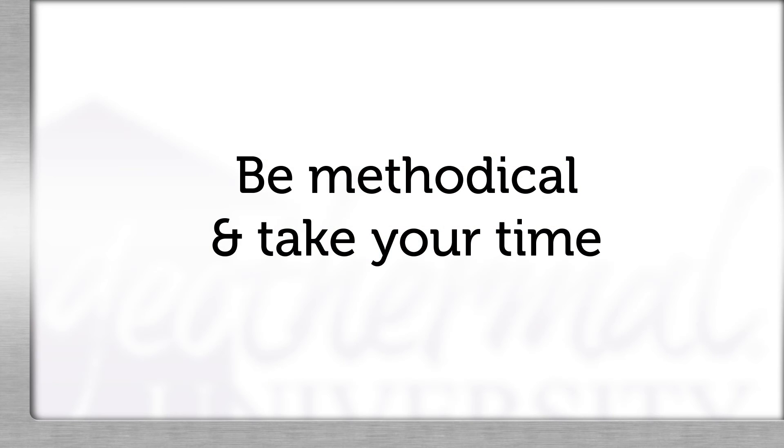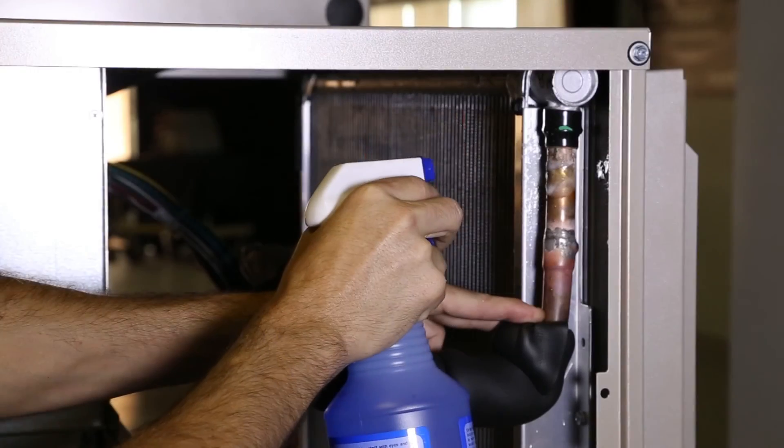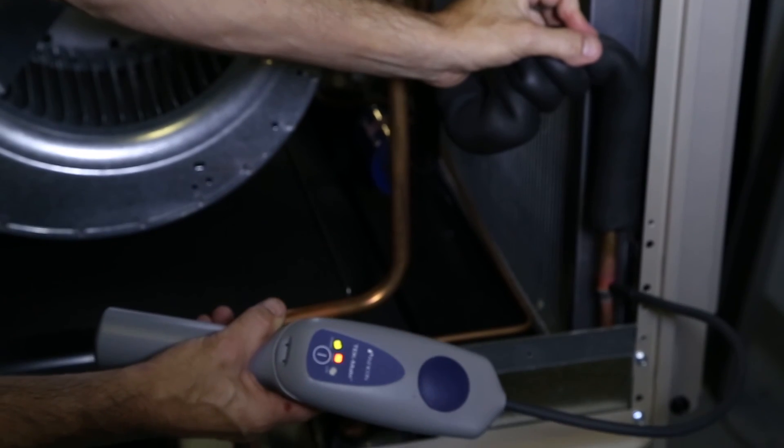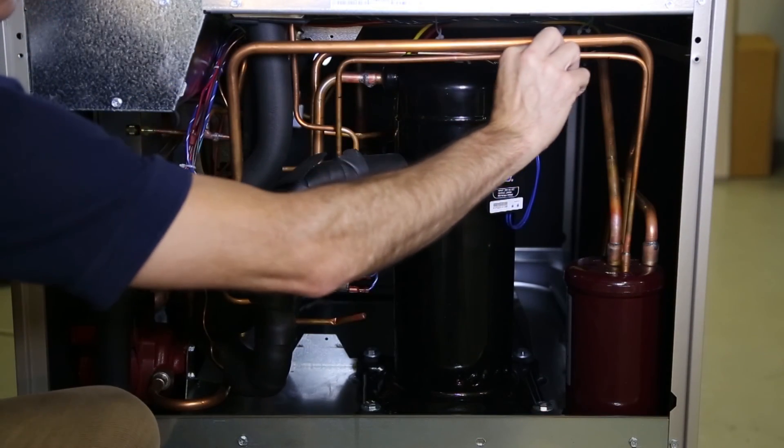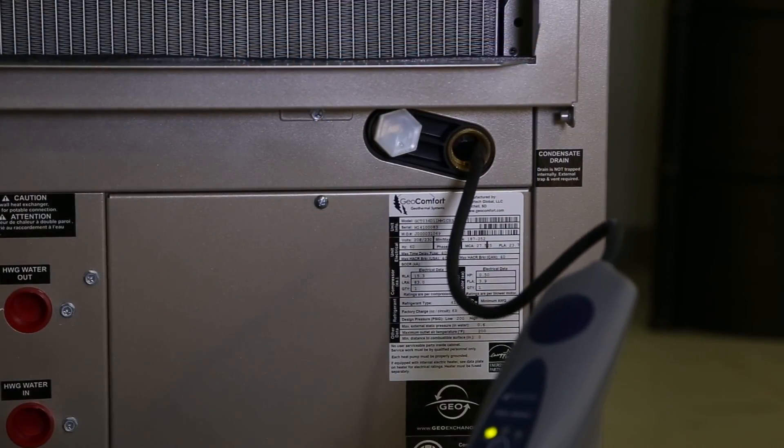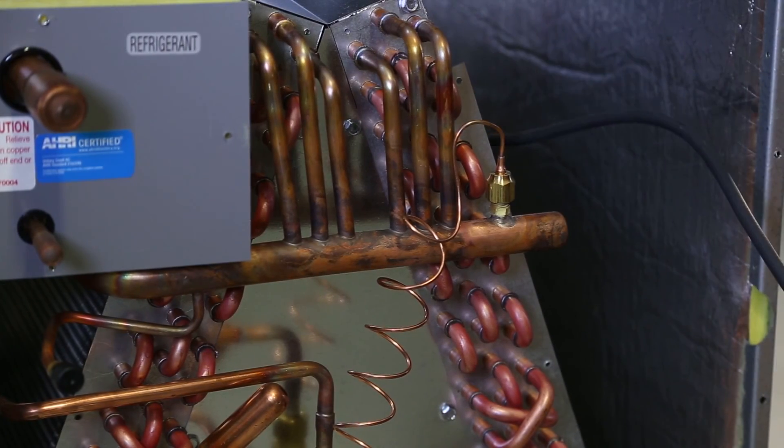In summary, please don't forget the following important steps when leak checking. Be methodical and take your time. Multiple leak detection devices may be necessary. Check the whole system including fusible plugs, braze joints, pressure switches, process tubes, service valve stems, Schrader valves, mechanical fittings, and bi-metal transitions or the aluminum to copper connections.